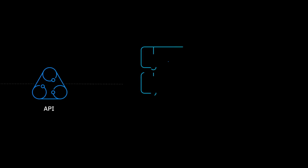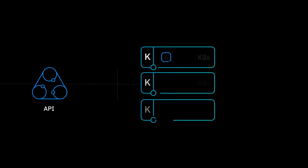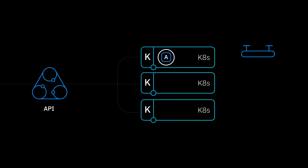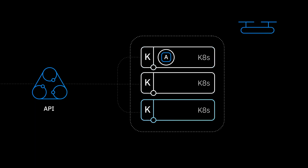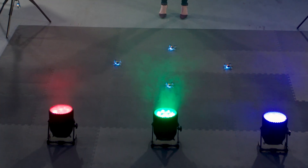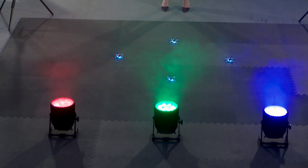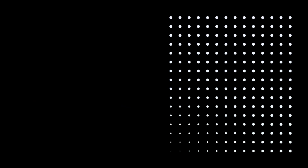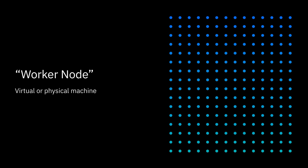As a reminder, the container for our online travel application is encapsulated in a pod, and a drone is associated with each pod Kubernetes deploys. Worker nodes are where our application containers actually run. To demonstrate how pods interact with worker nodes, we'll use these three lights. Each light represents a worker node. Keep in mind that a worker node can be either a virtual or physical machine. Kubernetes manages this underlying infrastructure.